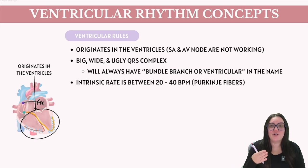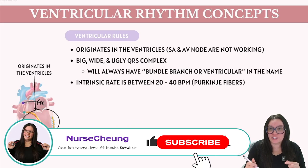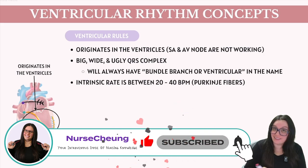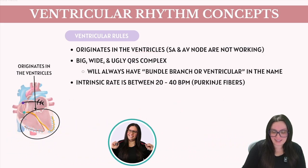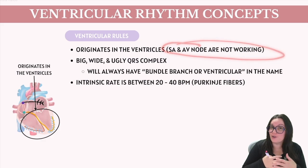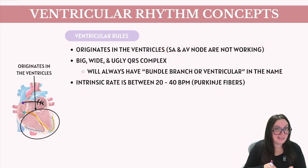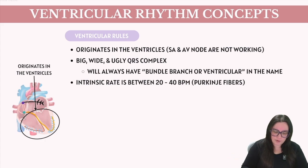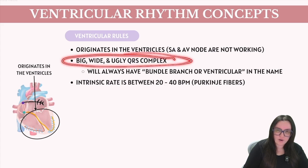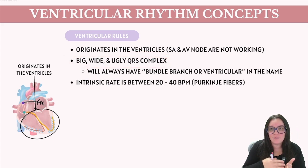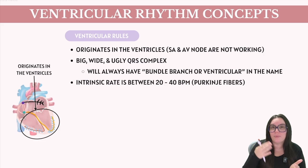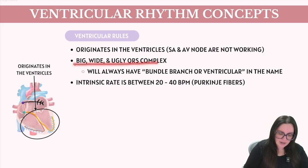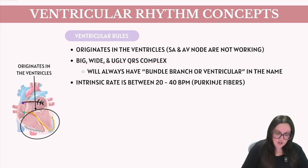So as always we're going to start with our ventricular rules. The big thing with ventricular rhythms is they're going to originate, like the name says, in the ventricles. That means that the SA node and the AV node are no longer working and those Purkinje fibers are having to kick in to maintain that heart rate. When we see a big, wide, and ugly QRS, it is coming from somewhere within our ventricles or our bundle branches. Anytime you see a big, wide, ugly QRS complex, know that it is always going to have bundle branch or ventricular in the name.